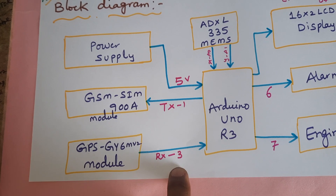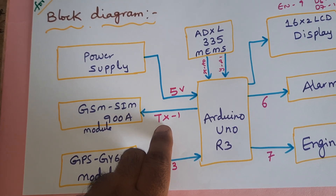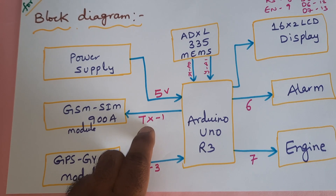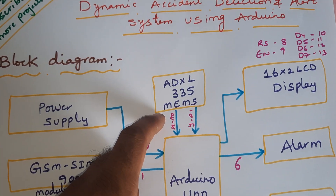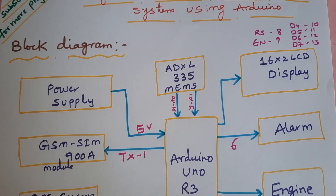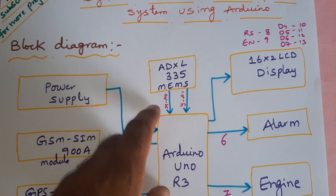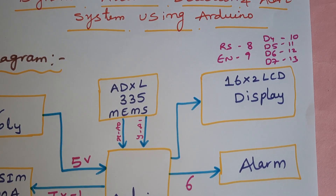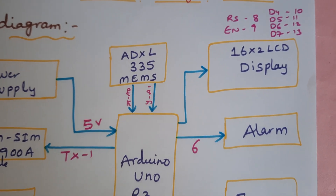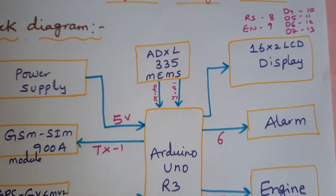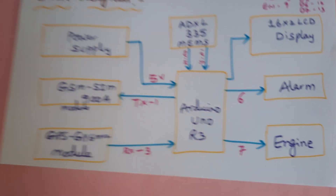The GPS module is connected to the external serial communication connected to the third pin. The serial communication TX pin is connected to the first pin. The ADXL335 MEMS accelerometer sensor is connected with X coordinate and Y coordinate to pins A0 and A1. A 16x2 LCD display is connected with RS, enable, D4, D5, D6, D7 on pins 8, 9, 10, 11, 12, 13. The alarm is on the sixth pin and engine on the seventh pin.